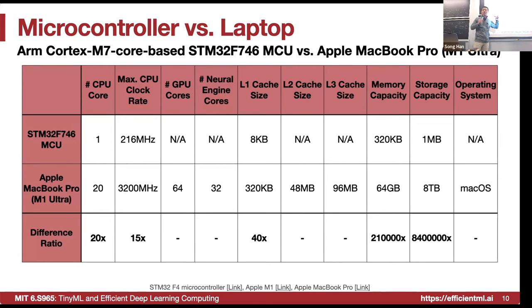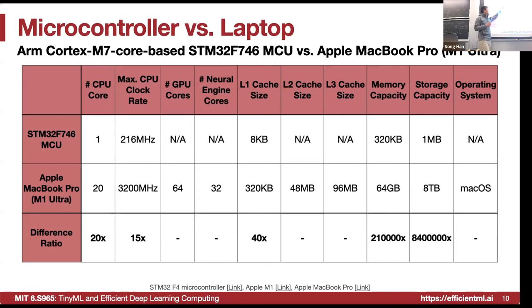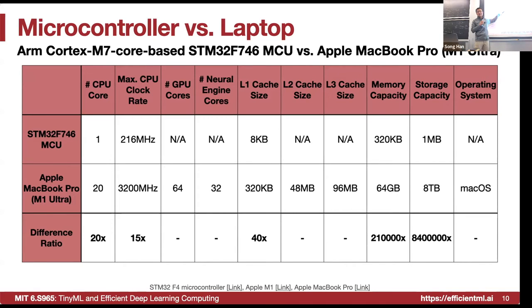Here is a rough comparison between the STM32 F746 microcontroller — the board we are going to use in lab four — and an Apple MacBook Pro M1 Ultra. The microcontroller has a single core clocked at about 216 MHz, while the M1 Ultra has 20 cores at 3 GHz — an order of magnitude difference. This gives us low power, since power consumption is proportional to frequency: P = CV²F, where C is capacitance, V is voltage, and F is frequency.